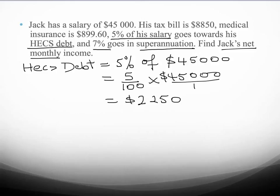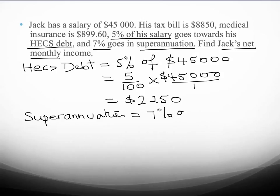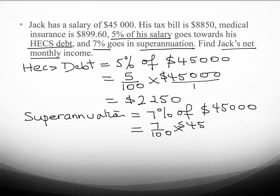Now we're going to calculate the amount that he pays in superannuation. His superannuation is 7% of his annual income, so 7% of $45,000. That's 7 divided by 100 times $45,000, so superannuation equals $3,150.